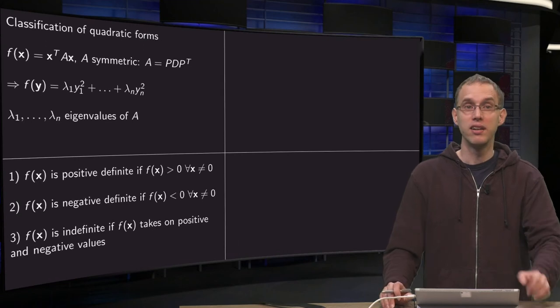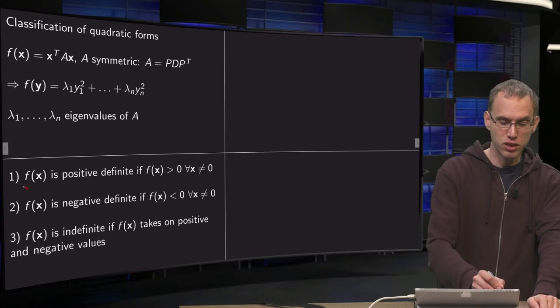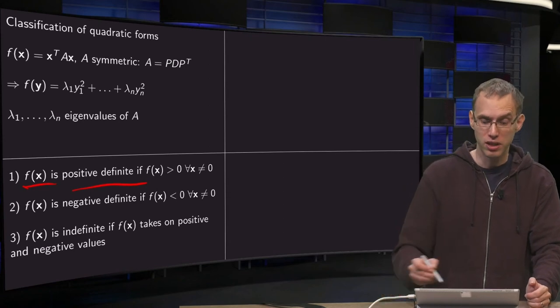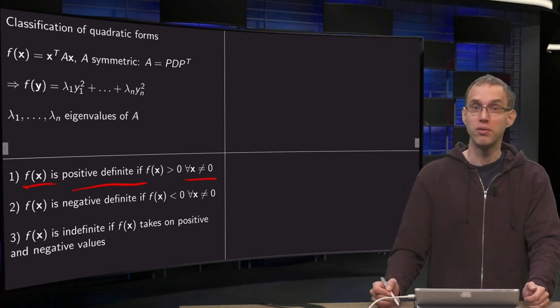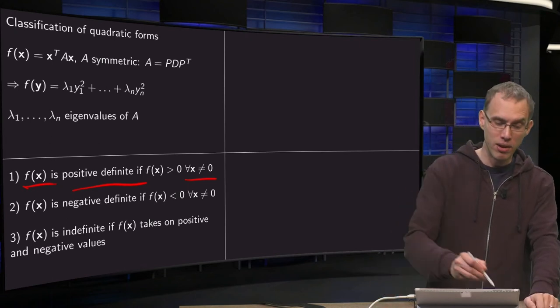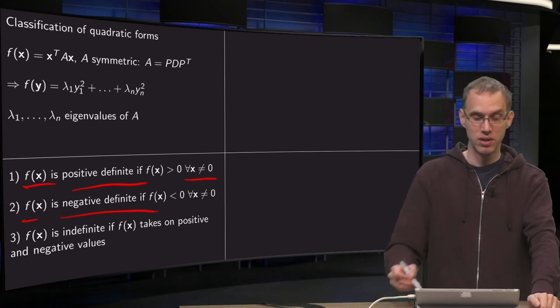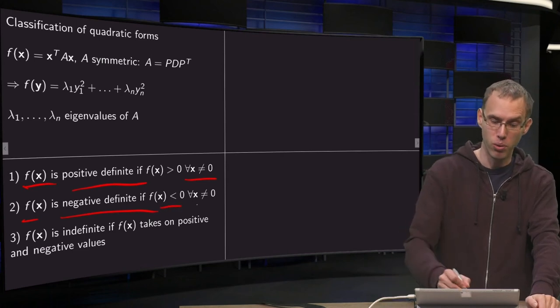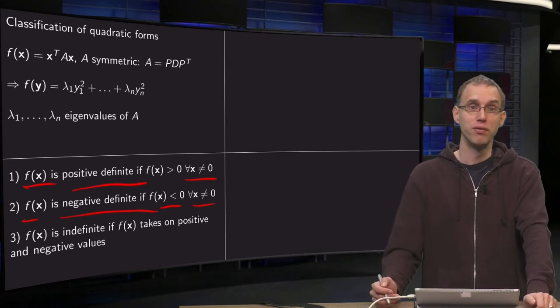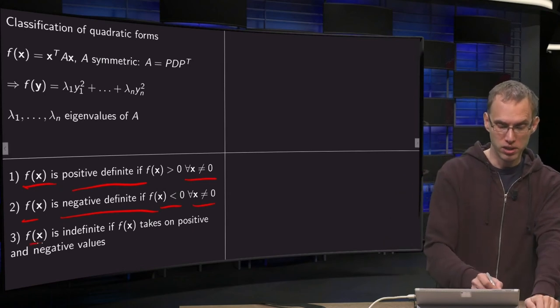Now we are going to classify the quadratic forms. F of x is called positive definite if f of x is always bigger than 0 for all x that are not equal to 0. Of course for x equals 0 you get f of x equals 0 obviously. F of x is called negative definite if the quadratic form is always negative, so f of x is always smaller than 0 for all x not equal to 0. And if your function takes on both positive and negative values then f of x is called indefinite.